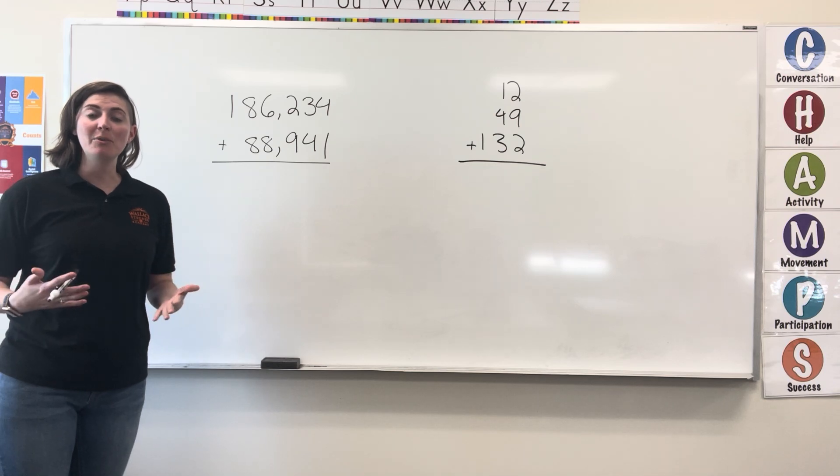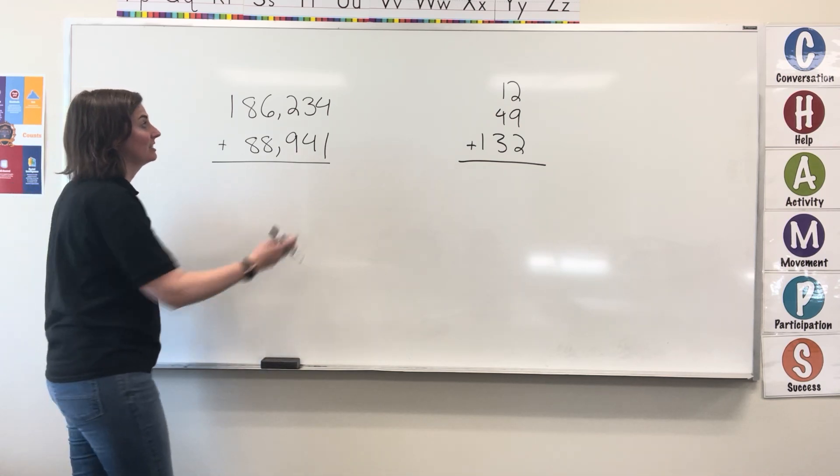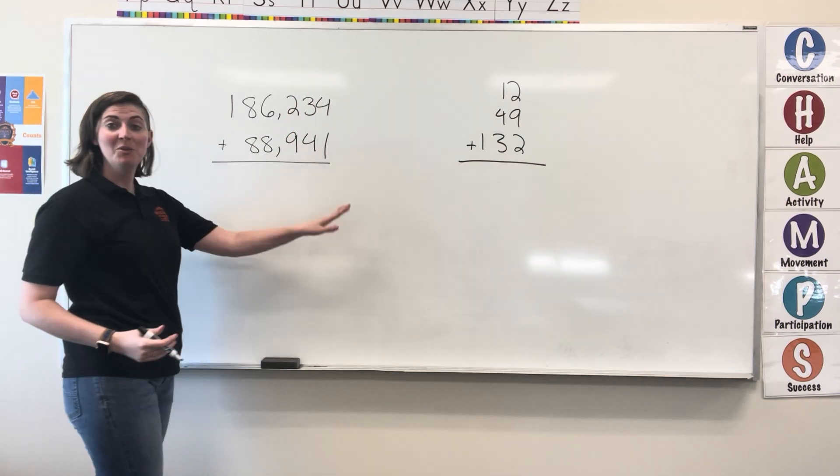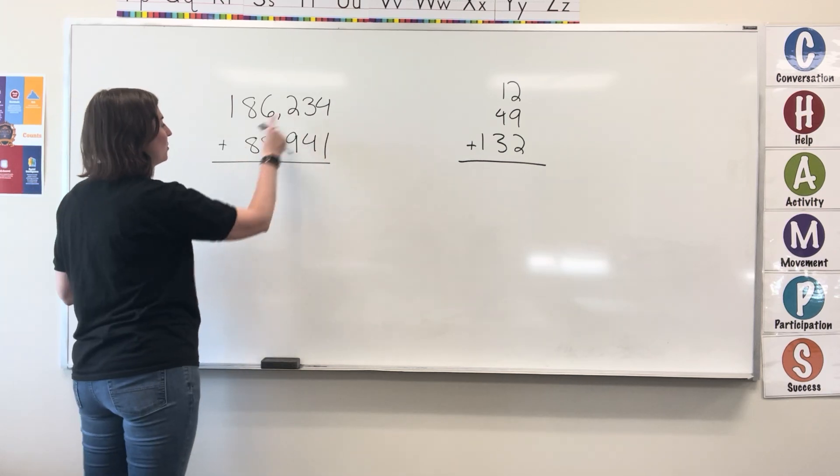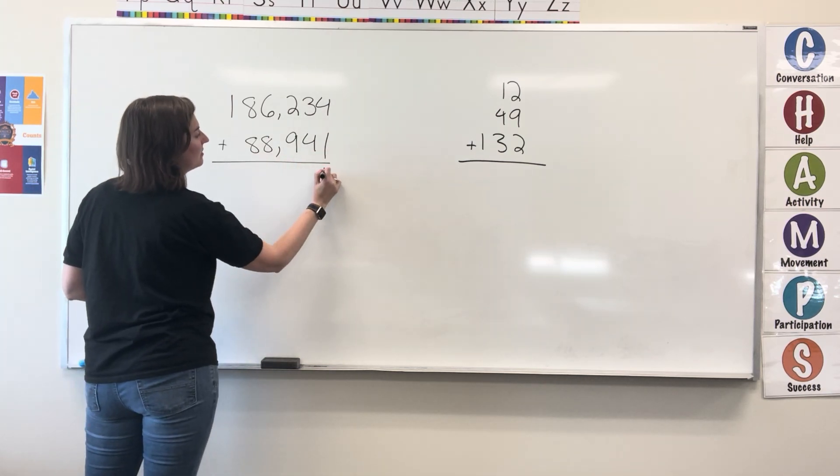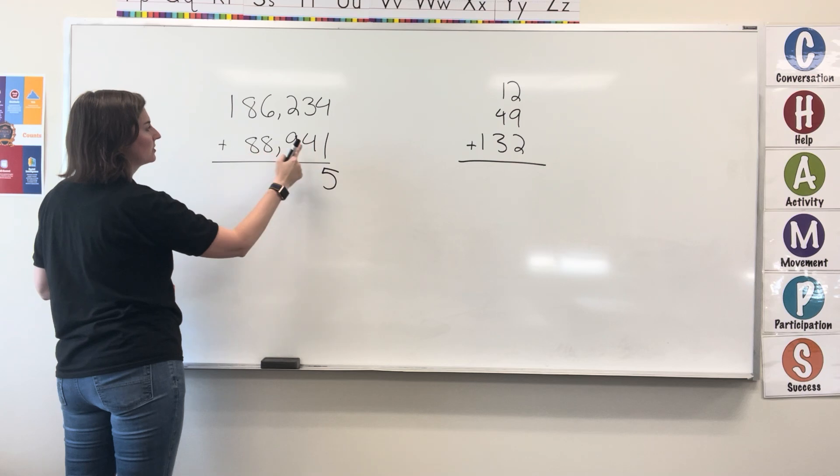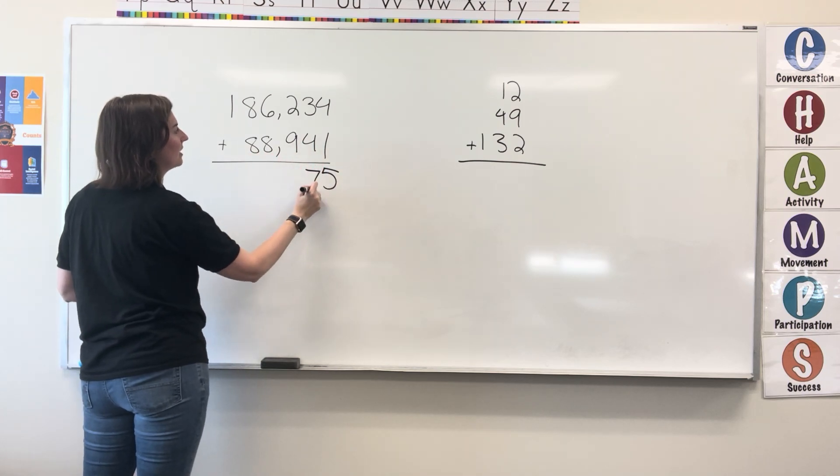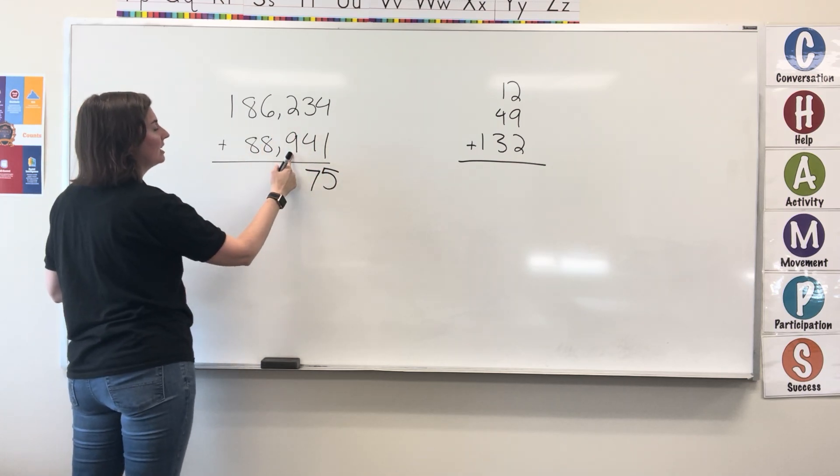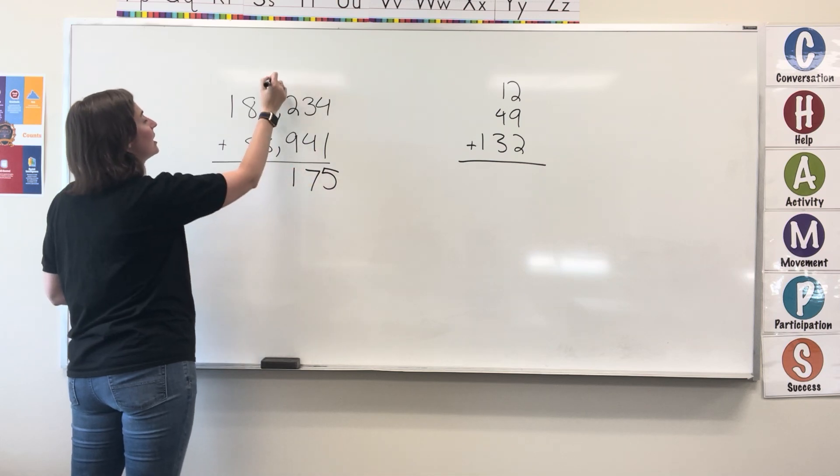When we start adding, we always start in the 1's place value column, and we move from there. We have 4 plus 1 equals 5, write the 5. 3 plus 4 equals 7, write the 7. 2 plus 9 equals 11, write the 1, carry the 1.